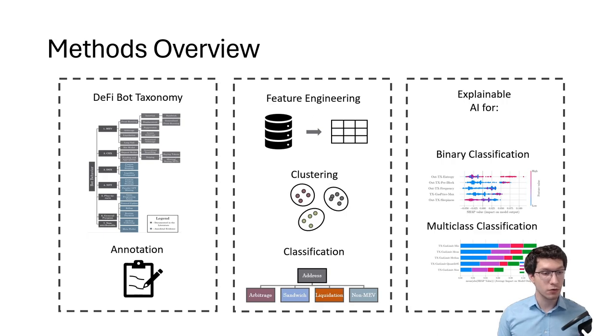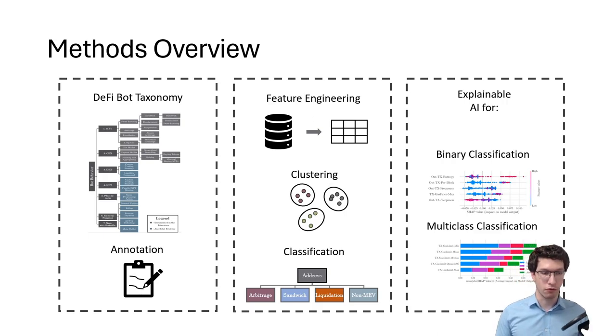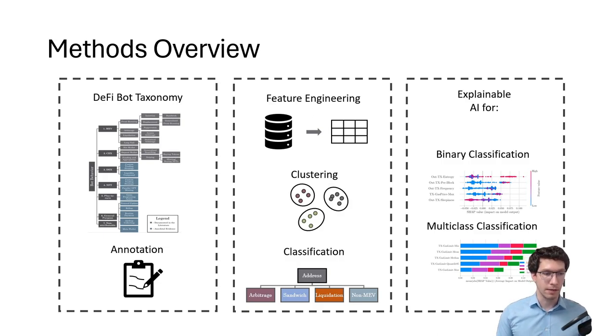Finally, to find out what features our best performing models used to make predictions, we use an explainable AI method, namely SHAP values.